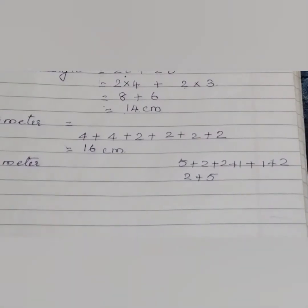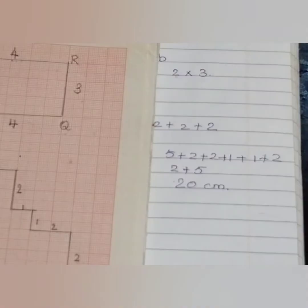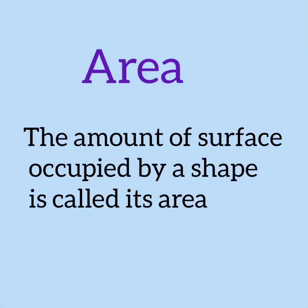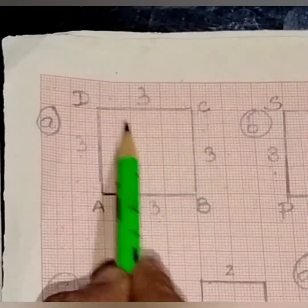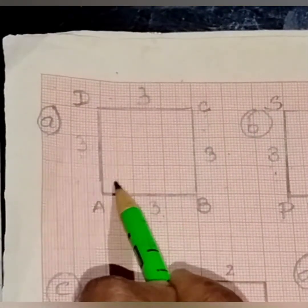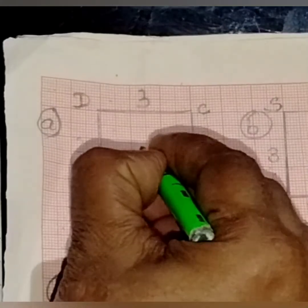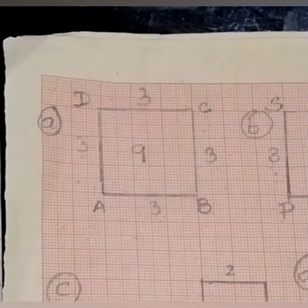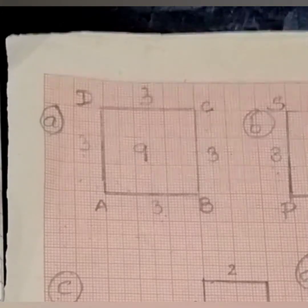Now, I will show you area using the same images on the graph paper. Area is the amount of surface occupied by a shape. Let us count the number of squares inside this square box: 1, 2, 3, 4, 5, 6, 7, 8, 9 — it is 9. That is, this square ABCD has occupied 9 squares in the graph paper, which means its area is 9 square centimetres.